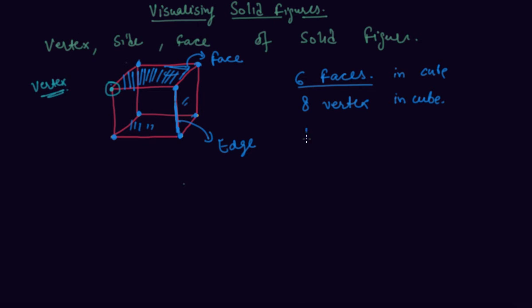And number of edges will be... Let me take it with another color. This is one side, two side, three side, four, five, six, seven, eight, nine, ten, eleven, twelve. So there are 12 edges you can see. Twelve edges, not sides.